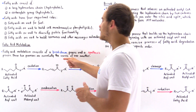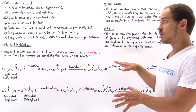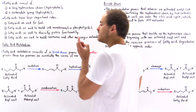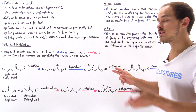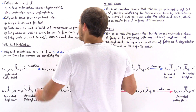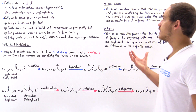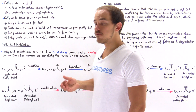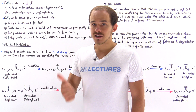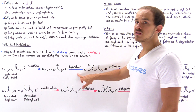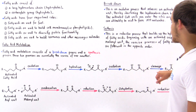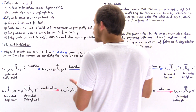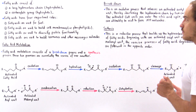Now let's discuss the breakdown and the synthesis of fatty acids. As we'll see, these two processes are essentially mirror images of one another — they're the reverse of one another. The breakdown of fatty acids consists of four steps: an oxidation step, a hydration step, another oxidation step, and a cleavage. These four processes together make one cycle of fatty acid breakdown.